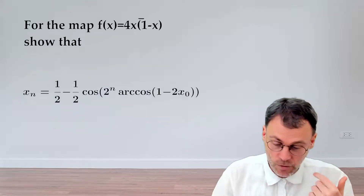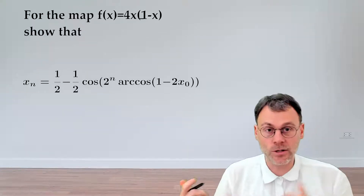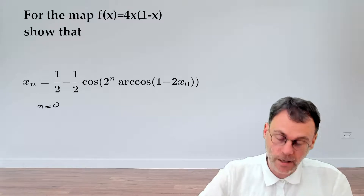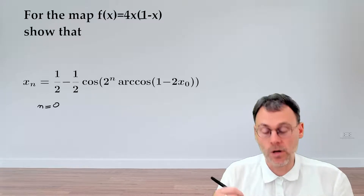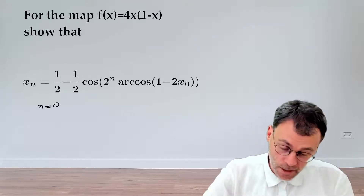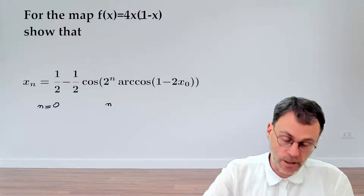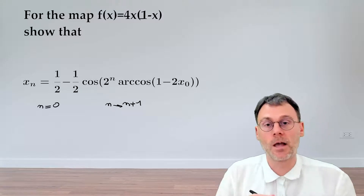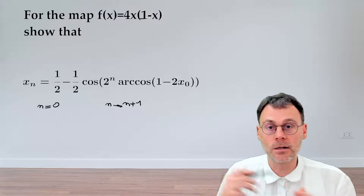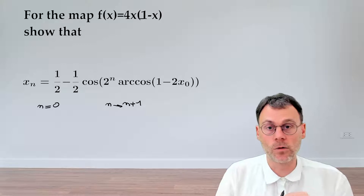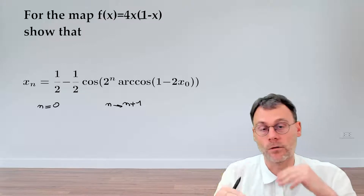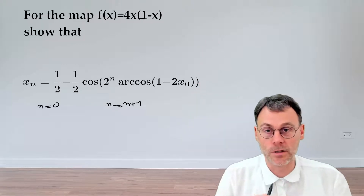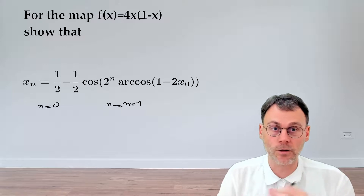one particular strategy is first showing that it's true for n equal to 0, and then showing that if it's true for n, it's also true for n plus 1. Combining these two facts allows you to ladder your way from 0 to 1 to 2, all the way up towards infinity. So: mathematical induction.